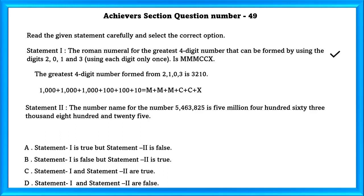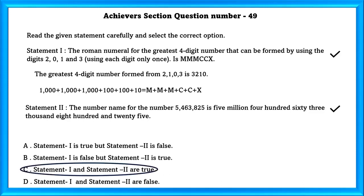Statement 2. The number name for the given number 5463825 is 5,463,825. Yes, that is also correct. So our answer is C. Statement 1 and statement 2 are true.